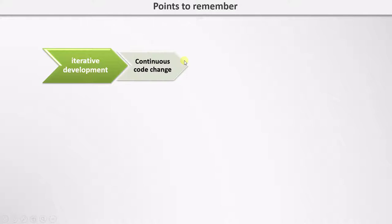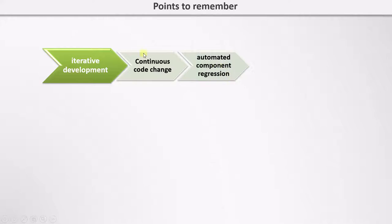A few points to remember before we move on. In the iterative model, where testing is done again and again — like in the Agile method — continuous code change will happen. In each iteration the code will change, and if the customer provides feedback, then the code will change yet again. So in the iterative development model, we have to automate component regression. Manual testing is difficult here since the code is changing very fast. But if the components are automated, then we can keep up with the pace of the project. Automated testing will also help us build confidence, since manual testing takes up a lot more time.